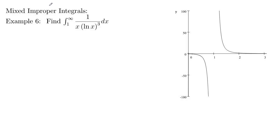In our last example of improper integrals, we want to look at what's called a mixed improper integral. We're going to integrate from 1 to infinity of 1 over x times the natural log of x cubed dx. We've got an infinite interval here, but we're also integrating starting at 1, and the natural log of 1 is 0, so that's a 0 in the denominator.